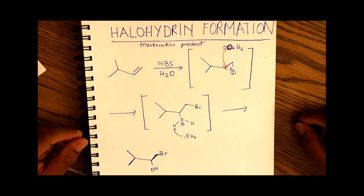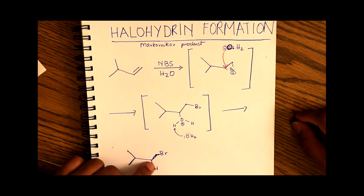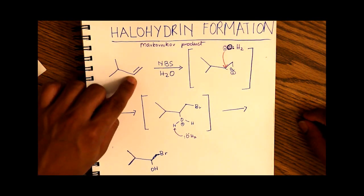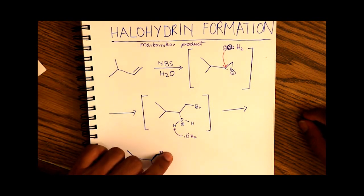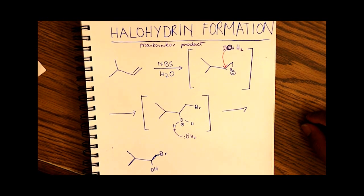What we end up with is the Markovnikov product, since the stronger nucleophile ends up on the more substituted carbon — in this case the secondary carbon — and bromine ended up on the primary carbon of the original pi bond. This is an example of halohydrin formation.